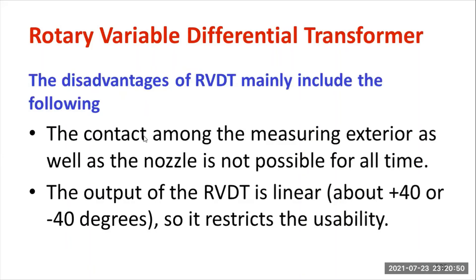Regarding the setbacks of RVDT: contact between the measuring surface and the nozzle is not always possible — that is one major setback. Another setback is that the output of RVDT is linear only within the range of approximately plus 40 and minus 40 degrees. Beyond that range, the output becomes non-linear, which restricts its usage. So the linear range is restricted.